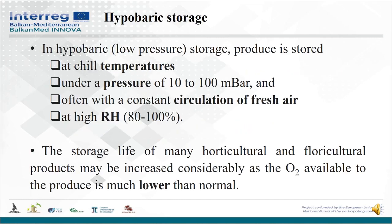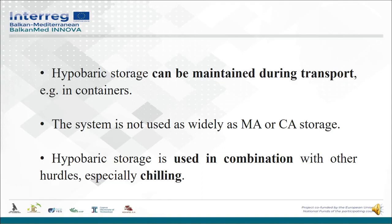As for hyperbaric storage, the produce is stored at chill temperatures under pressures of 10 to 100 millibar, often with a constant circulation of fresh air at high relative humidity of 80 to 100%. The storage life of many horticultural and floricultural products may be increased considerably, as the oxygen available to the produce is much lower than normal. Hyperbaric storage can be maintained during transport in containers, though the system is not used as widely as modified atmosphere or controlled atmosphere storage.